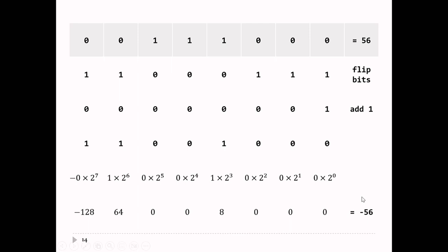Here's the number 56: 00111000. If I want to compute minus 56, I flip the bits: 11000111. Then add one. One and one is zero, carry the one; one and one plus zero is zero, carry the one; one and one plus zero is zero, carry the one; now one and zero is one, and the rest is the same. Crunching through the math, you get minus 56.